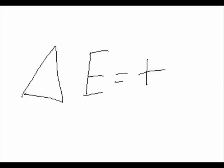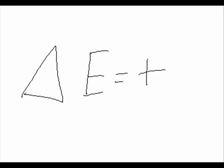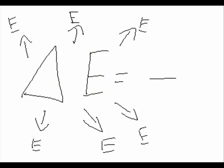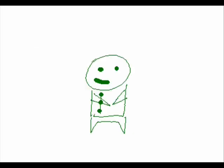So what does delta E tell you? Basically, if delta E is positive, the system will gain energy from its surroundings, which means it is an endothermic reaction. On the other hand, if delta E is negative, the system lost energy to its surroundings and is an exothermic reaction.